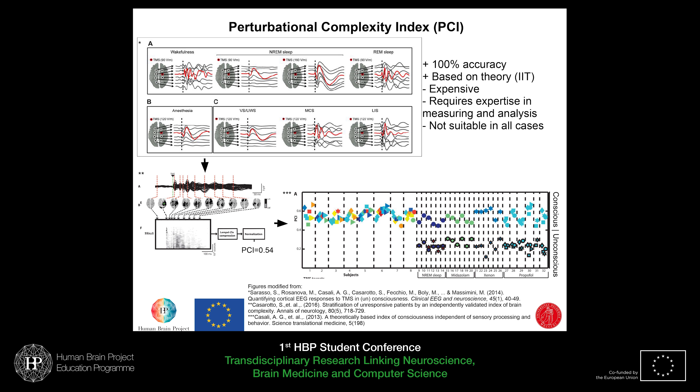I don't think you need a machine learning algorithm to say which state is which. So far, PCI shows 100% accuracy in delineating these states. It is also based on integrated information theory, making it one of the few measurements out there based on a formal theory of consciousness.